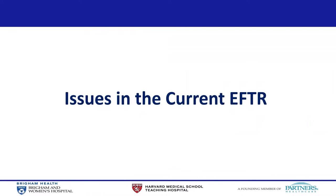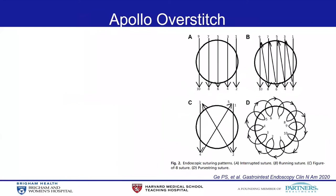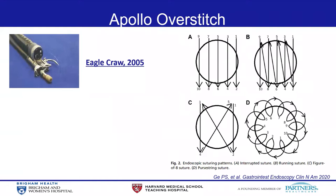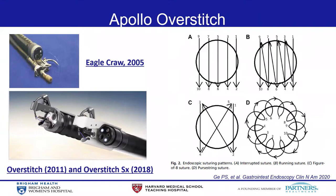I'm going to show some current issues with the EFTR technique. If you look at the current design of the overstitch, this is the earliest design of the endoscopic suturing device, called Eagle Claw, developed in 2005, which evolved into the overstitch in 2011. More recently, the overstitch SX — developed for single-channel endoscopes — became available in 2018. The endoscopic suturing device allows various suturing patterns, including interrupted suture, running suture, figure-of-eight suture, and purse-string suture.